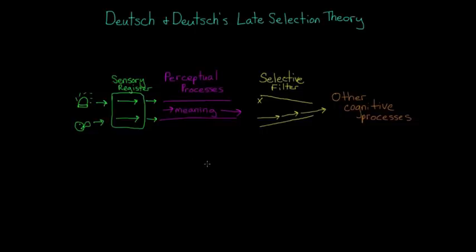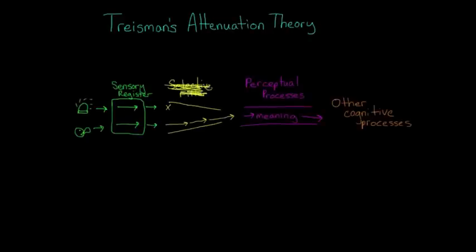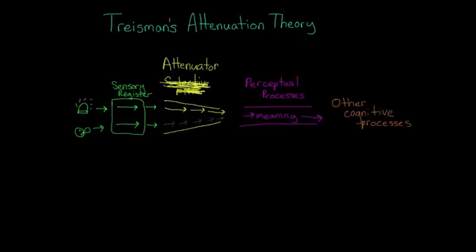So the answer might be somewhere in between early selection and late selection. So we come to Treisman's attenuation theory of selective attention. Treisman said that instead of a complete filter, we have something called an attenuator. Attenuate just means to weaken. So the attenuator weakens but doesn't eliminate the input from the unattended ear. Then some of it gets through to the perceptual processes, so we still assign meaning to stuff in the unattended ear. It's just not as high priority. At this point, if you realize that the unattended stuff is actually important, then you'll switch over your attention and attenuate what you were previously listening to.